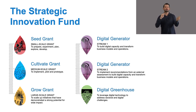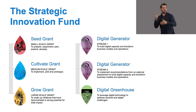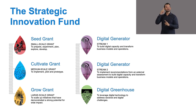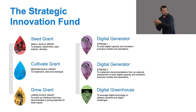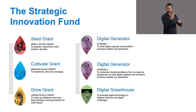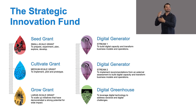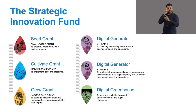The Strategic Innovation Fund is made up of 3 main components — seed, cultivate, grow — and 2 support components — digital generator, which has 2 sub-components, and digital greenhouse. It is important to keep in mind that the Strategic Innovation Fund is not intended for artistic creation, or projects focused on production, programming, or the dissemination of artistic works. For more information on each of the Fund's components, you can find resources on our website.